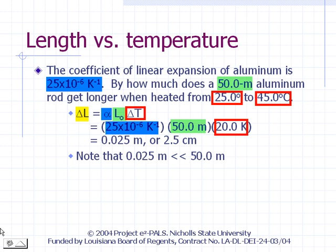Note that the temperature changed from 25 to 45 degrees Celsius — that's a change of 20 degrees Celsius. We do not add 273.15 to change this to Kelvin. We are not converting the temperature reading; we are converting a temperature difference. Carrying out the calculation gives us a change in length of 0.025 meters or 2.5 centimeters. Note that this change is very small compared to the original length of 50 meters, so we can expect our answer to be reliable.